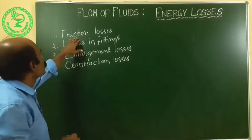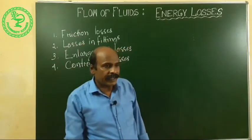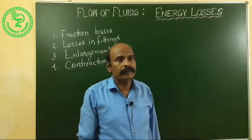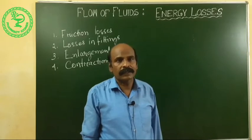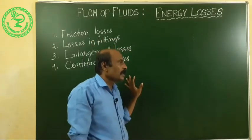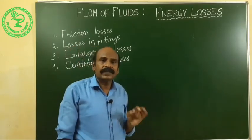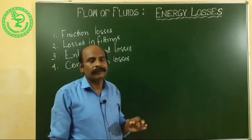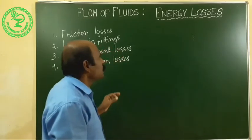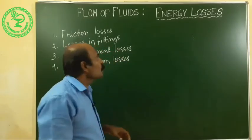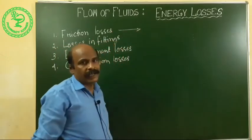The first one is friction losses. When a fluid is flowing through a pipe, there will be energy loss due to friction — this is called friction losses. The fluid flow in the pipe may be viscous, turbulent, or sometimes transitional flow. When it is viscous or turbulent flow, we can determine the energy losses by the Fanning equation.